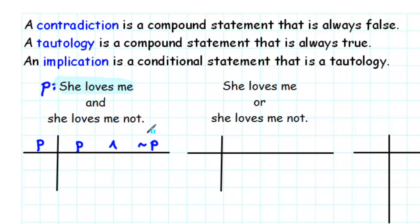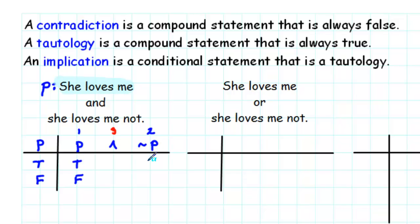Since this compound statement only involves one simple statement, we only need to consider two different cases: the first case is that P is true, and the second case is that P is false. We'll fill in column P, then column not P, and then finally form the conjunction of columns one and two. For P, we copy the values true and false. For not P, we find the negation: the negation of true is false, and the negation of false is true. Finally, we'll form the conjunction of these two columns.